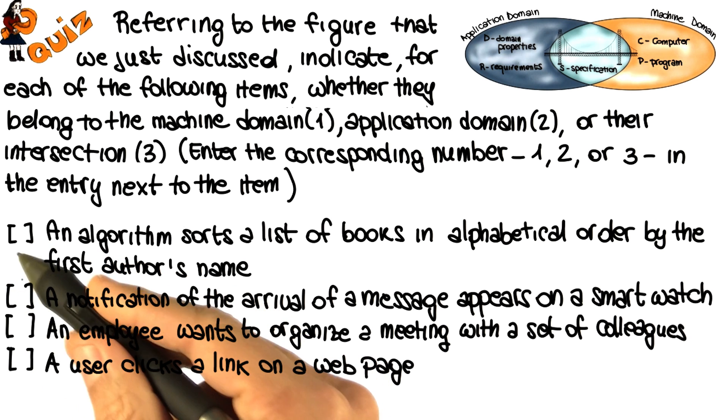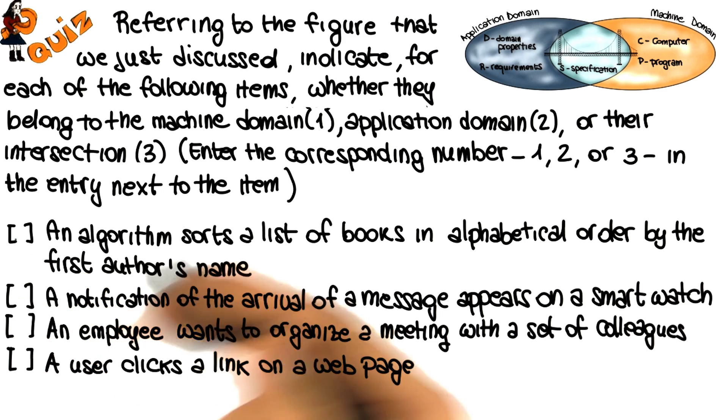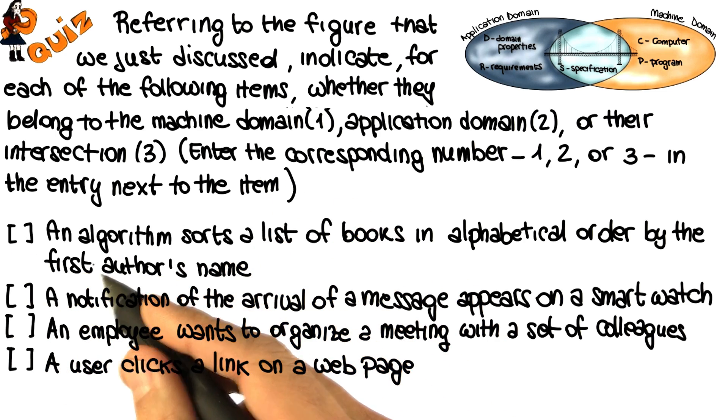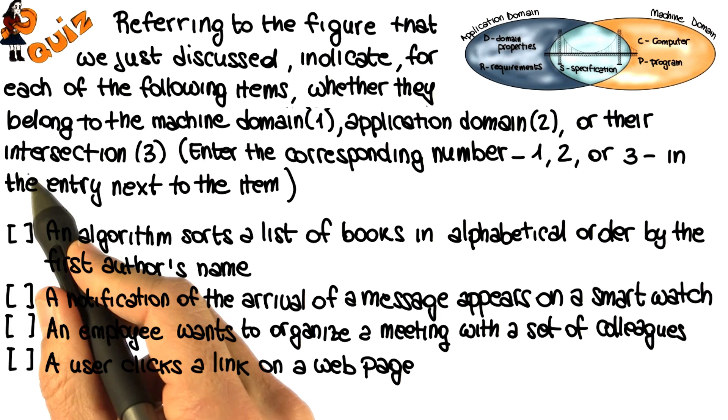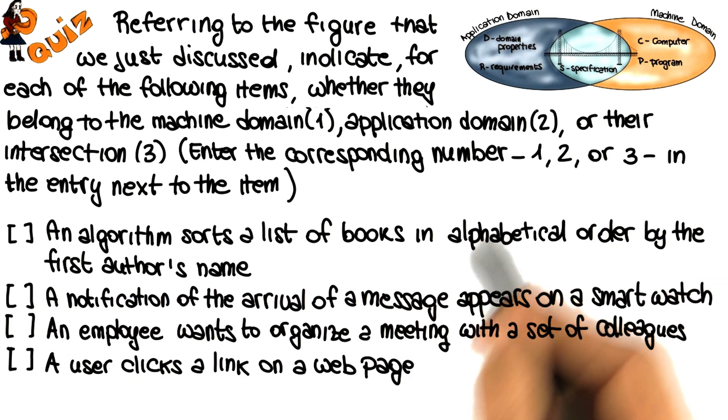So again, put one, two, or three here in the slots, depending on whether you think that these items belong to the machine domain, the application domain, or their intersection.